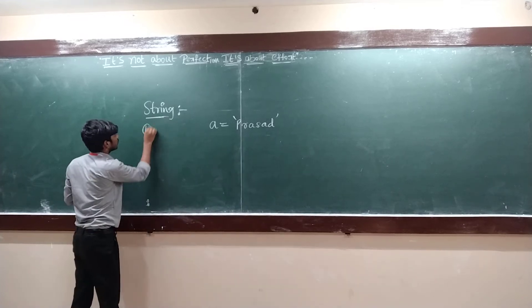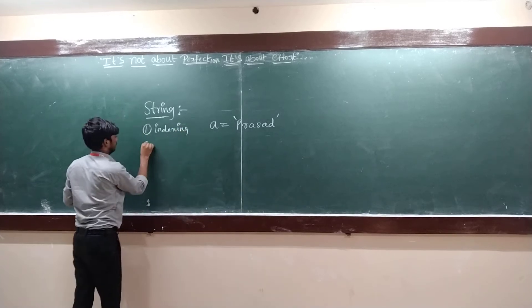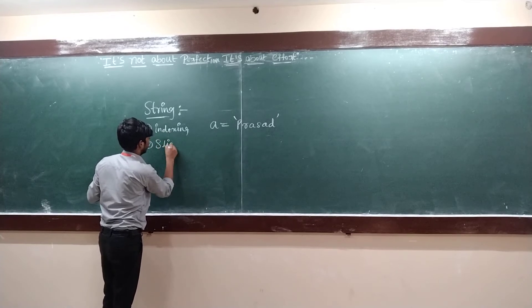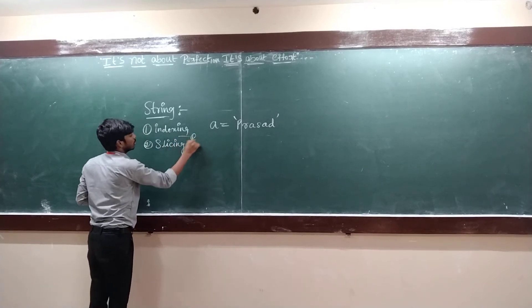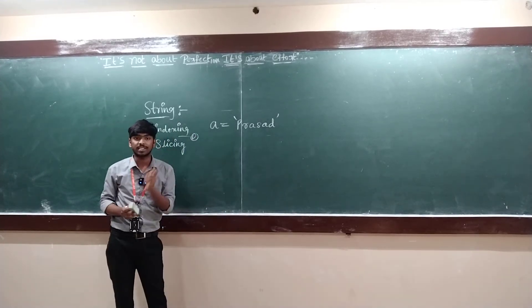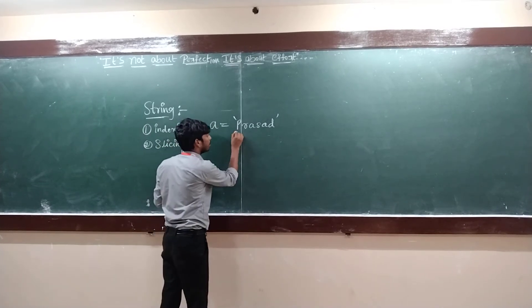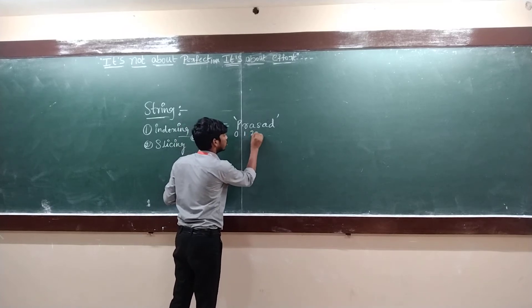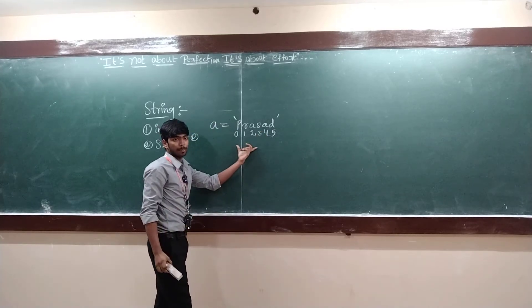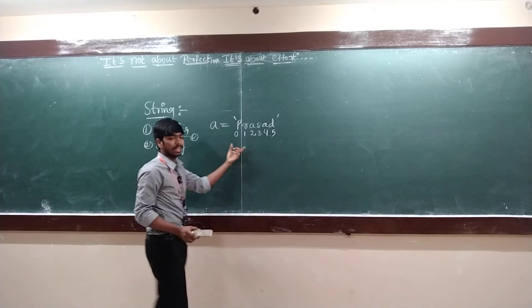Now, in strings, I am going to tell you about indexing and slicing. First, if you see indexing — indexing is nothing but assigning index numbers to each character in a given string. Prasad is the given string. Indexing starts from number 0, then 1, 2, 3, 4, 5. The string Prasad has six characters, so the index starts from 0 and ends with 5. This is nothing but indexing of a string.